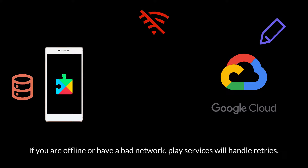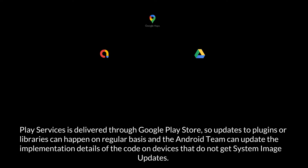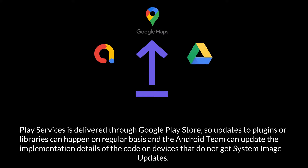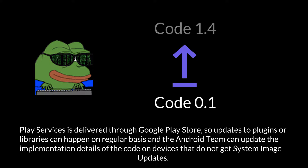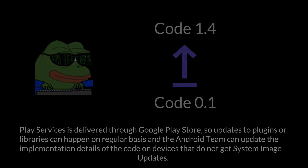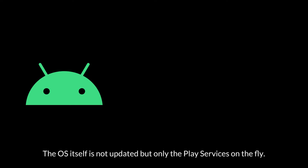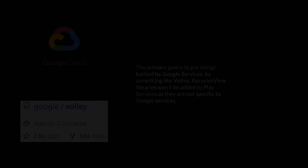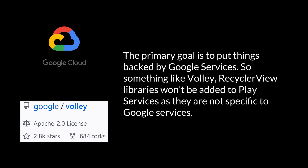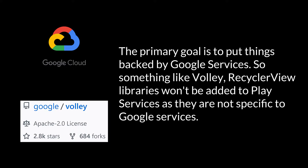If you are offline or have a bad network, Google Play Services will handle retries. Play Services is delivered through the Google Play Store, so updates to plugins or libraries can happen on a regular basis and the Android team can update implementation details on devices that do not get system image updates — the OS itself is not updated, but only Play Services on the fly. The primary goal of Play Services is to put things backed by Google Services, so libraries like Volley or RecyclerView won't be added as they are not specific to Google Services.